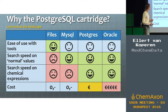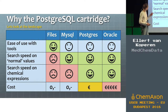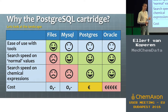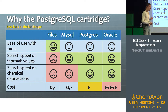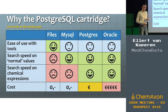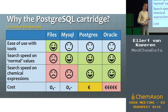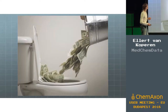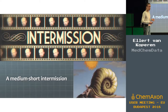Then there is the cost. Postgres itself is free. The cartridge is not free, except if you are only focused on experimenting — then you can make a special deal with the nice guys at ChemAxon. Oracle is actually quite the opposite of free. For me, the option was clear: Postgres.